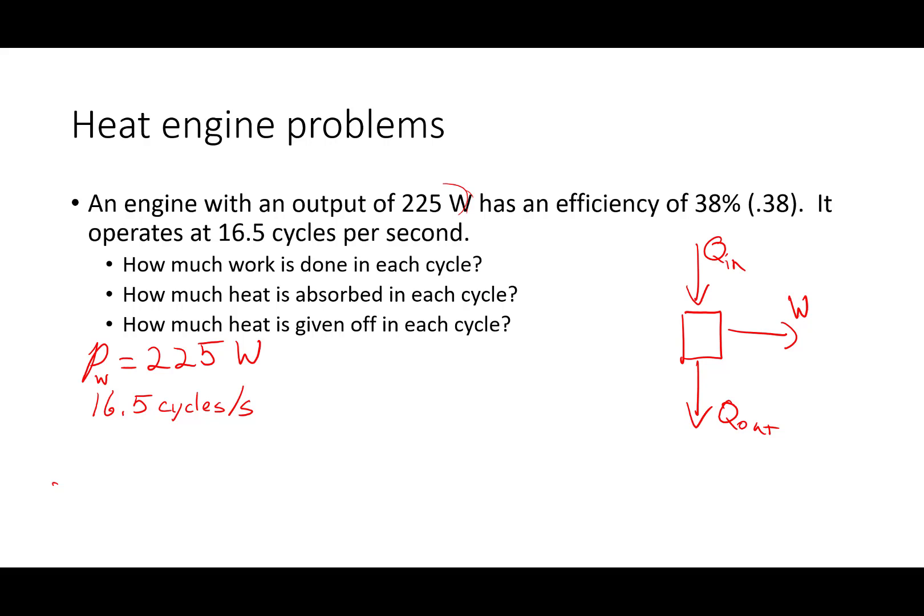So if we want to find the total power output, the total power output is just going to be the power output for one cycle. So that is the energy per cycle per cycle. Really, let's call it what it is, the work per cycle times the cycles per second.